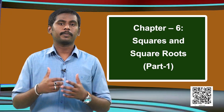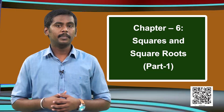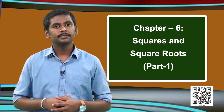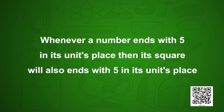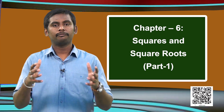How about numbers ending with 5? When we take 5: 5×5 = 25, which ends with 5 in its units place. Taking a bigger number, 25: 25×25 = 625, which also has 5 in its units place. So whenever a number ends with 5 in its units place, its square will always end with 5 in the units place. By this we have seen 5 properties of square numbers.